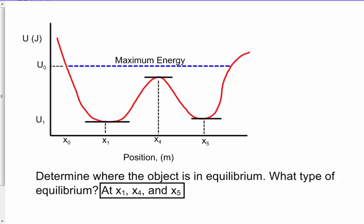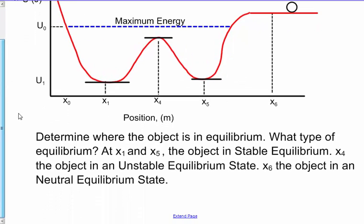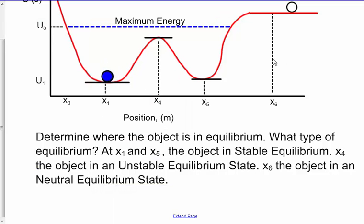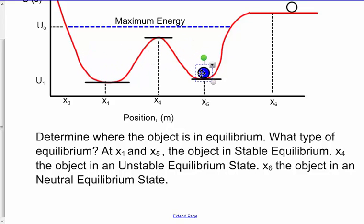Now you have different types of equilibrium. At positions x1 and x5, the system is going to be in what's called stable equilibrium. Meaning that if I had a ball here and I try to move it away from the equilibrium point, it's always going to want to move back toward the equilibrium point. The forces are always going to try to pull it back. So x1 and x5 are called stable equilibrium points.